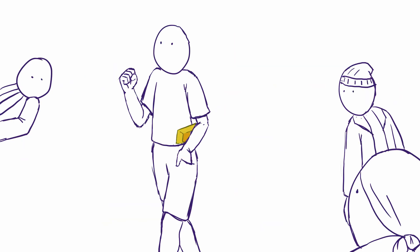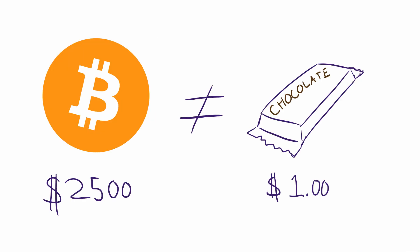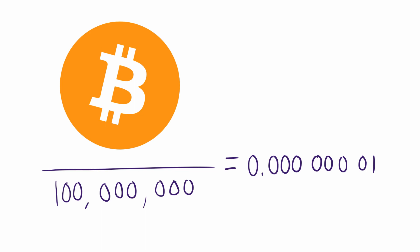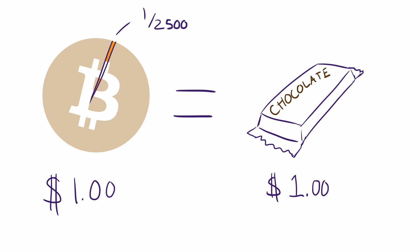As it is impractical to carry around a bar of gold, it is impractical to use a whole Bitcoin to buy something. Therefore, Bitcoin can be broken up to one hundred millionth of a Bitcoin, that's seven zeros behind the decimal. This makes Bitcoin more viable for transactions, especially when you need to buy something over the internet.